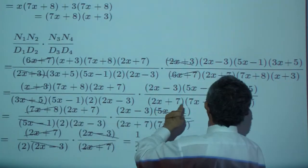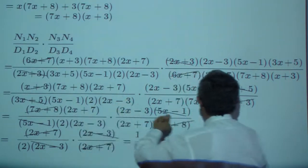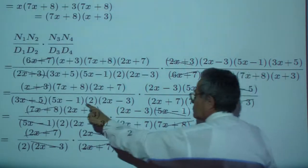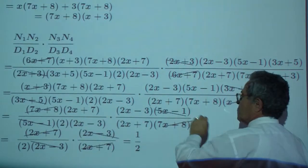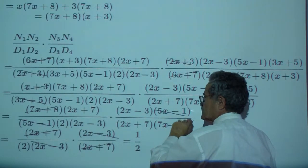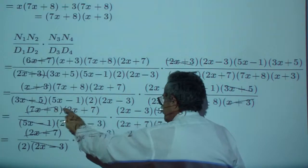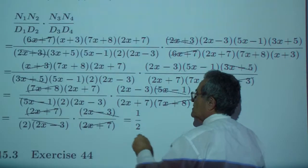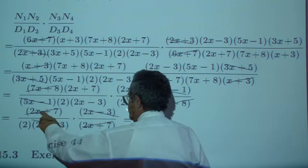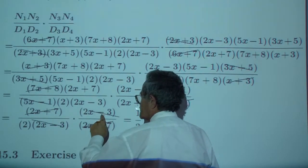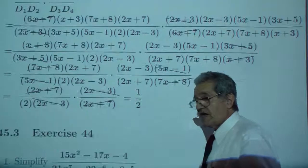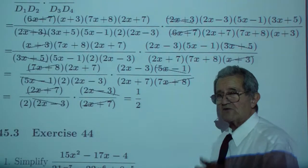Then you have x plus 3 over x plus 3. You have 3x plus 5 over 3x plus 5. Then you divide 5x minus 1 by 5x minus 1, which is 1. 7x plus 8 over 7x plus 8. And it just so happens that the 2x plus 7 drops out. Then the 2x minus 3 drops out. And you're left with 1 half. All this work for just 1 half.